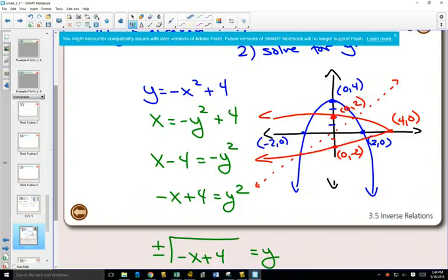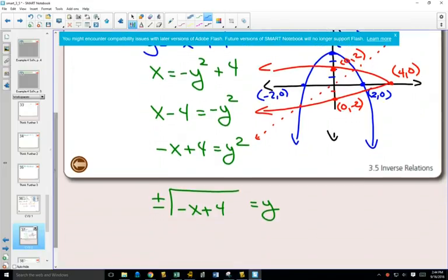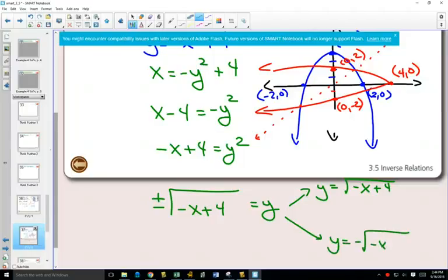If we wanted to use our equation to graph the red graph, our equation is right here, plus or minus the square root of negative x plus 4. That actually means that we have two equations. We have one equation with the positive. So that would be positive square root of minus x plus 4. And one equation with the negative, negative square root of negative x plus 4.